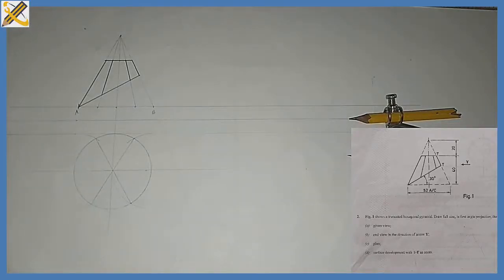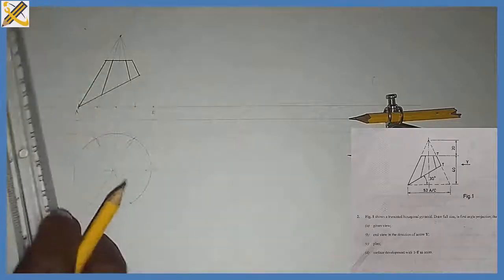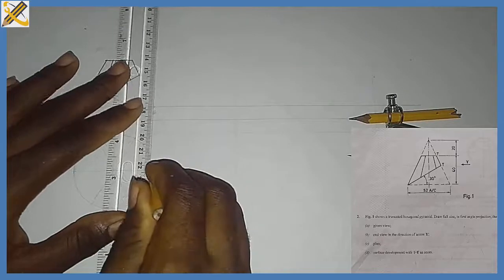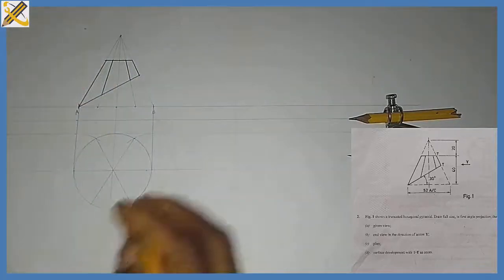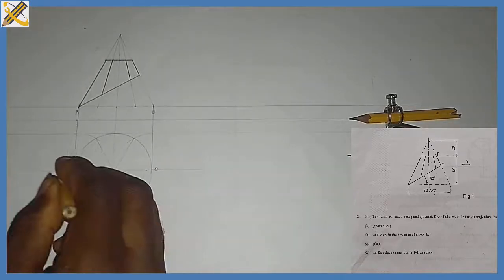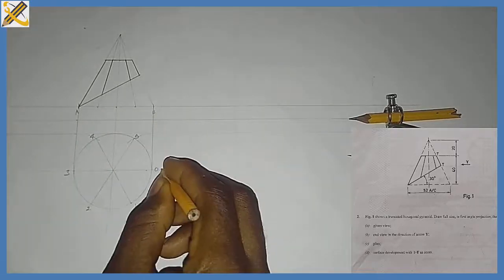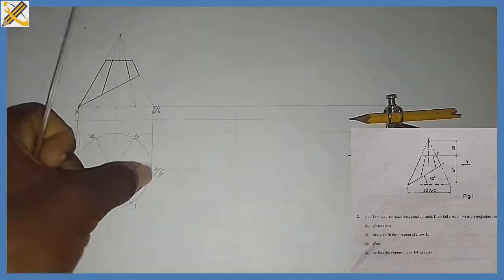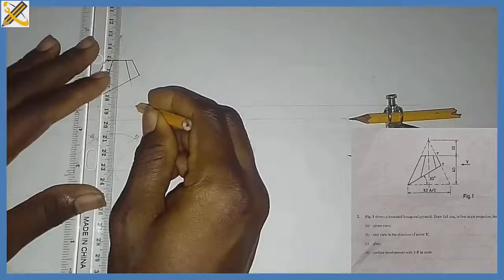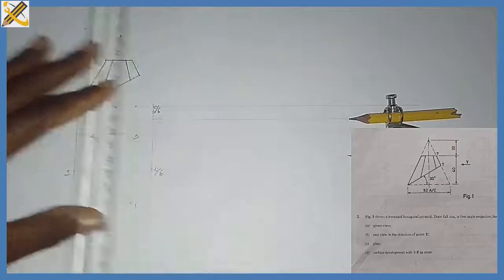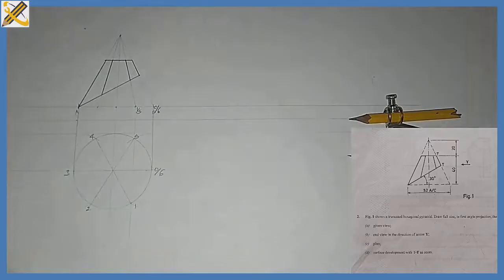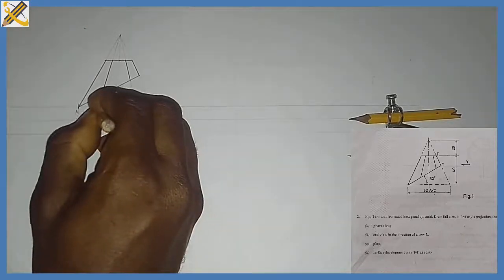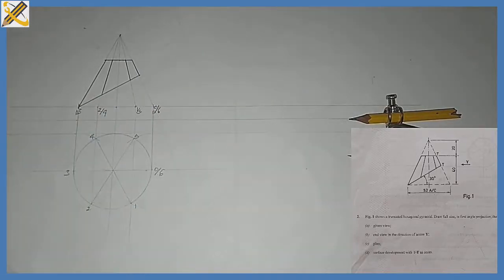Take note that mark A and this junction both lie on the same plane, and mark B and the other junction also lie on the same plane. I'm going to label the hexagon points: mark 0, mark 1, mark 2, mark 3, mark 4, mark 5, and 0 over 6 at the base. Point 1 and 5 align together, 2 and 4 align together, and mark 3 is the last one.